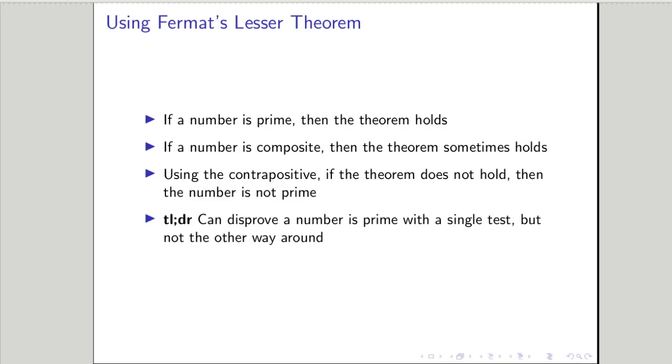So using the contrapositive, we're just going to flip the premise and the conclusion and say, well, if the theorem doesn't hold, so if we use that formula and we get a number that's not zero, then we know for sure the number is not prime. So that's just some basic logic. The long story short of this is we can, with a single test, quickly disprove if a number is prime. But we don't know the other way around. So it's sort of this one-sided test where we can, for sure, if we can come up with a counter example, we can disprove a number's primeness, but we can't really say anything about the other case.